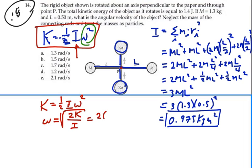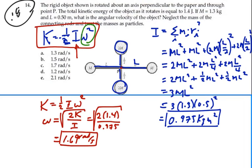So that is going to be the square root of 2 times 1.4 joules divided by 0.975 kilogram meter squared, which we just found. If I do that, I get 1.69 radians per second. So that is our angular velocity for this system of masses, 1.69 radians per second.